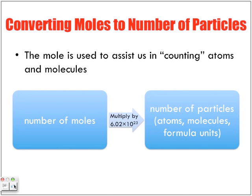Converting moles to number of particles: The mole is used to assist us in counting atoms and molecules. We take the number of moles and multiply it by 6.02 × 10²³ to get the number of particles—atoms, molecules, or formula units.